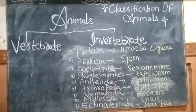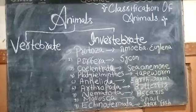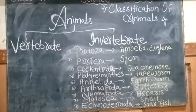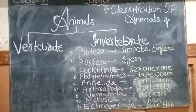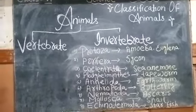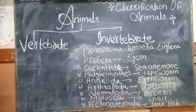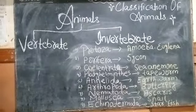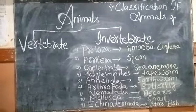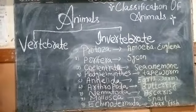Number two: Phylum Porifera. Porifera means that these animals have pores in their bodies. An example is the Sponge.